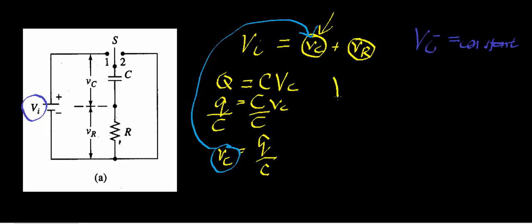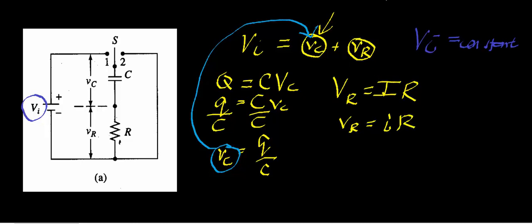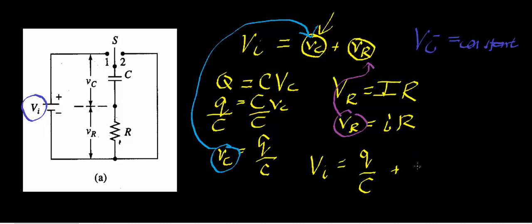In general, the voltage across the resistor equals the current across the resistor times the resistance. In instantaneous notation, the instantaneous voltage across the resistor equals the instantaneous current times the resistance. Substituting both expressions in, the input voltage equals instantaneous charge divided by capacitance — the capacitor term — plus instantaneous current times resistance — the resistor term.